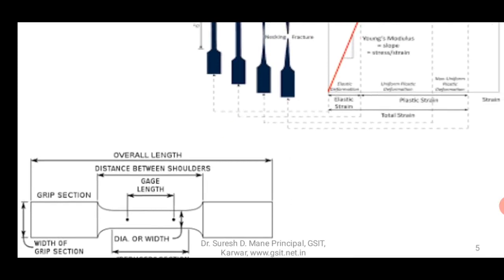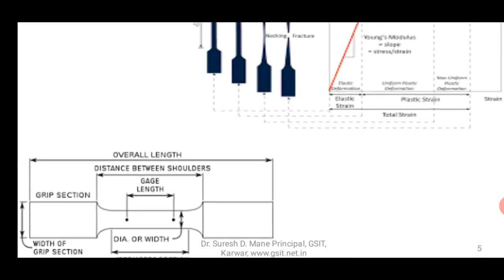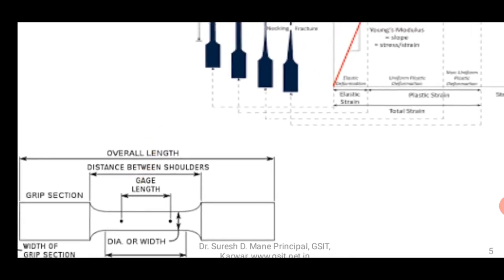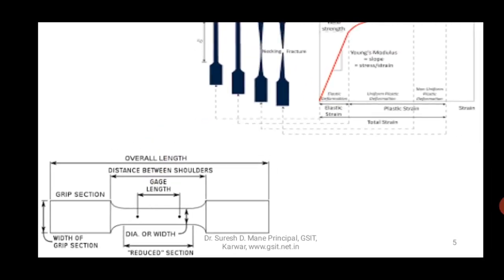For all these destructive tests there is a standard size of the specimen — you cannot take any arbitrary size and put it in the equipment. This diagram shows the overall length, distance between the shoulders, and the gauge length. Two dots are punched so that you can check the change in length. The extreme left and right ends are held in the chucks.